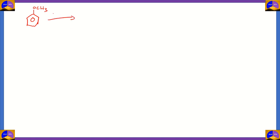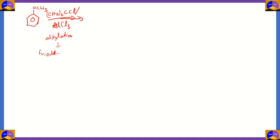We're going to treat anisole with (CH₃)₃CCl in the presence of AlCl₃. What is occurring here is alkylation, because an alkyl group — (CH₃)₃ — is getting added. Since we're using AlCl₃, that gives you the clue that this reaction is Friedel-Crafts alkylation. We're adding an alkyl group in the presence of AlCl₃, meaning we're undergoing Friedel-Crafts alkylation.